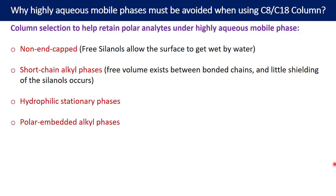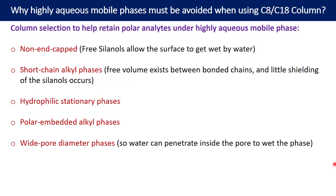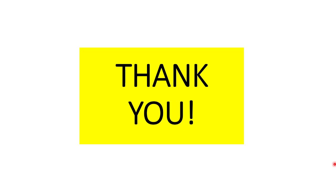You can also use polar embedded alkyl phases — examples include phenyl, pentafluorophenyl, and amine stationary phases. Last but not least, consider using wide pore diameter phases, because the larger the pore size, the higher the chance of water penetrating and wetting the pore. The smaller the pore, the lower the chance of water penetration. So always consider using columns with wide pore stationary phases. Thank you — I hope this helps you navigate the challenge of using highly aqueous mobile phases.